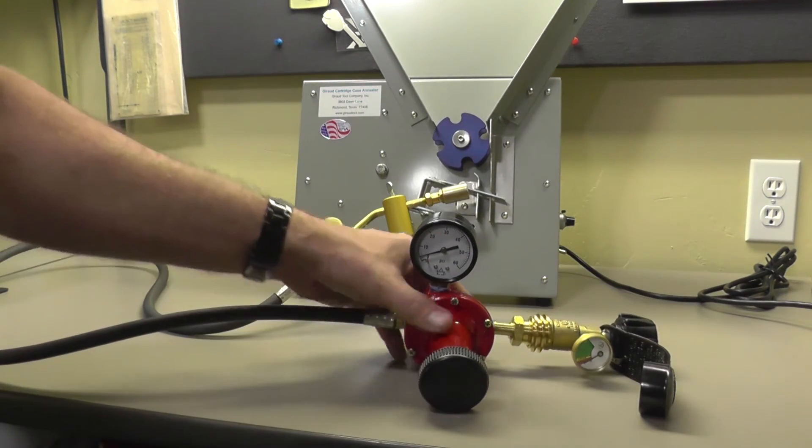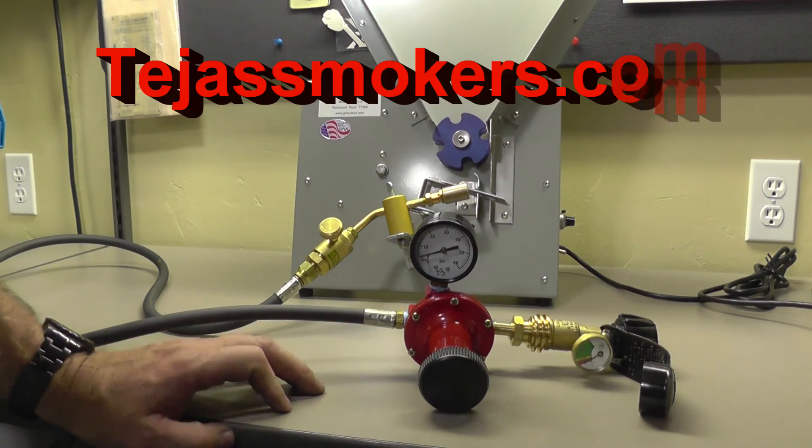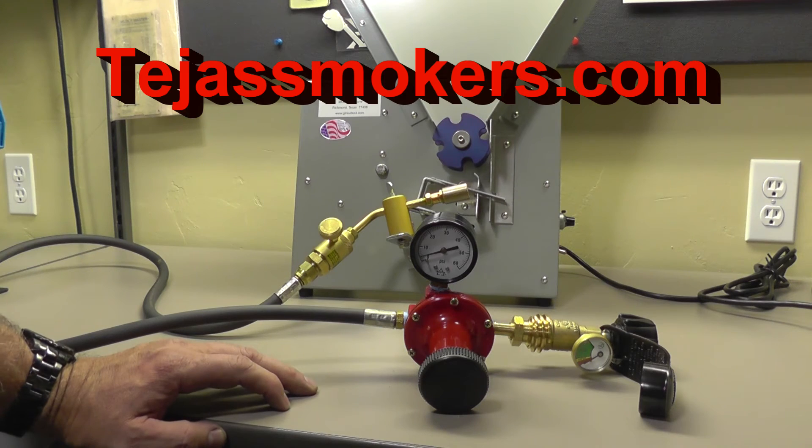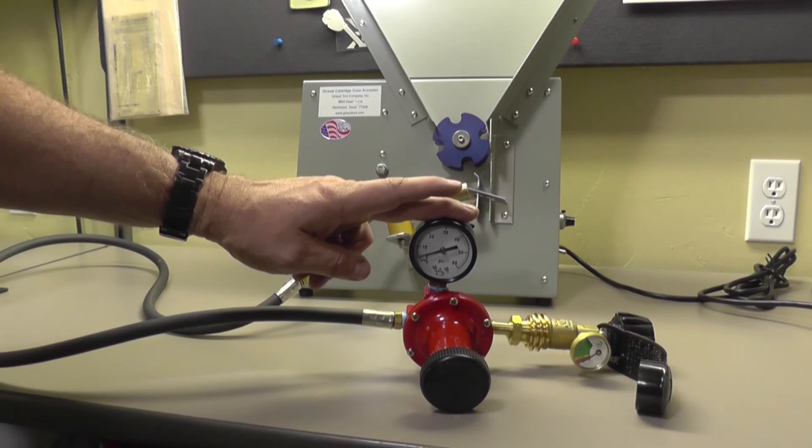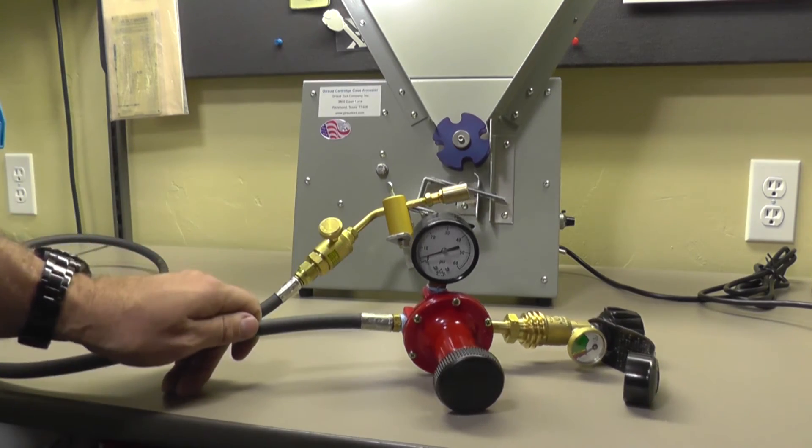So this is the pressure regulator I ended up with. It comes from teosmokers.com. It comes with the 30 psi regulator, the 60 psi gauge, and the five-foot hose.